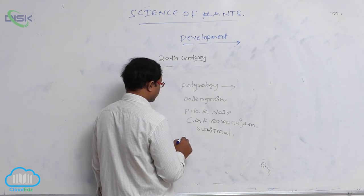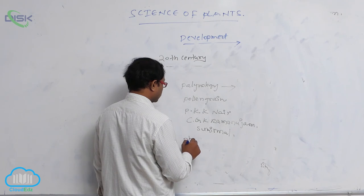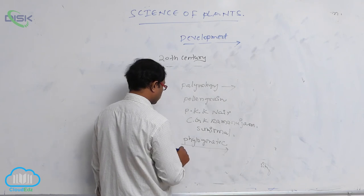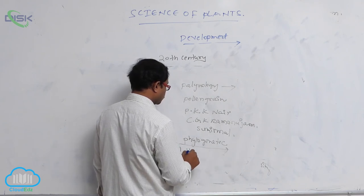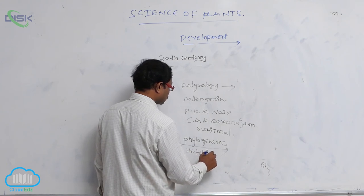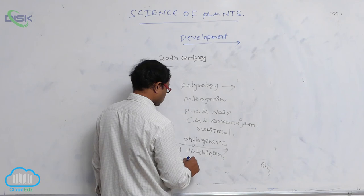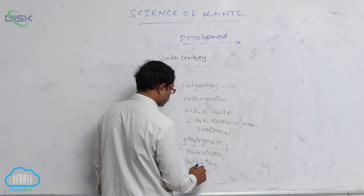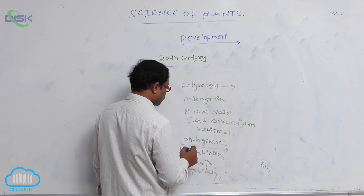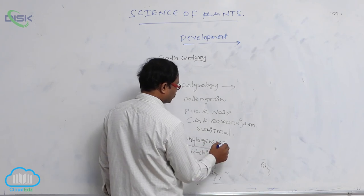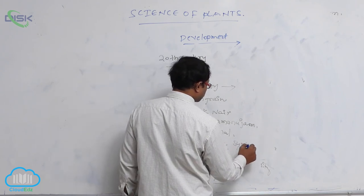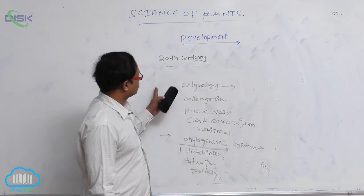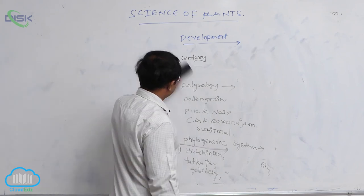Many scientists explained different systems of classification, known as the phylogenetic system of classification. Hutchinson, Takhtajan, and Goldberg used evolutionary characters for classification of plants. That is known as the development of botany.